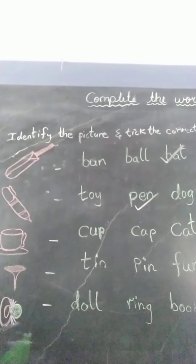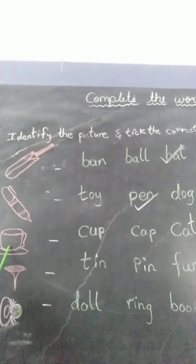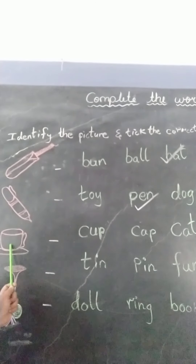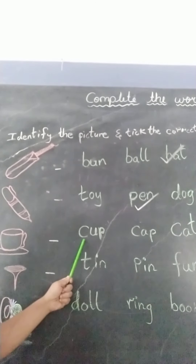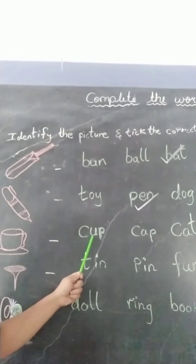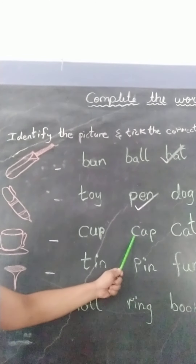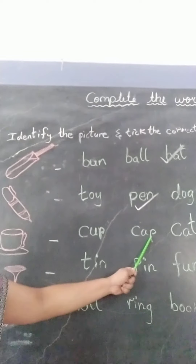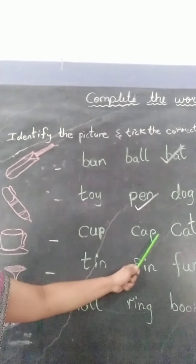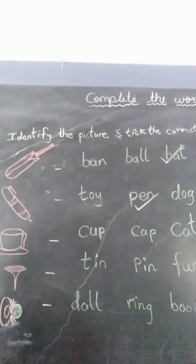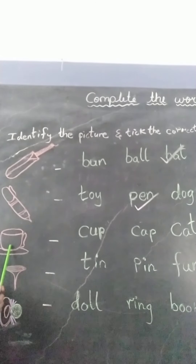Next picture is of a cup, cup and saucer. So let us see the spelling of cup. First word is C-U-P, cup. Next word is C-A-P, cap. Next word is C-A-T, cat.